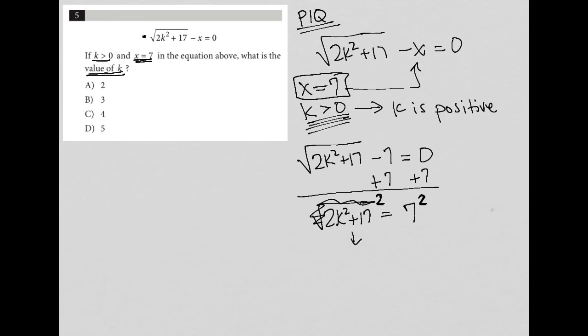What comes out of this is 2k squared plus 17. Then 7 squared is 49. I can then subtract 17, which leaves me with 2k squared equals 32.